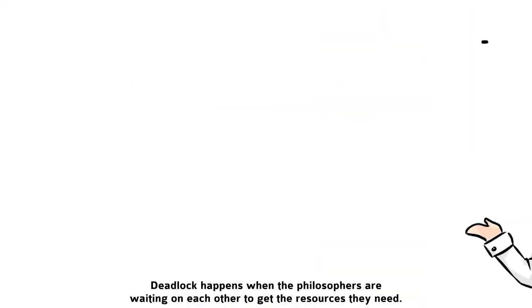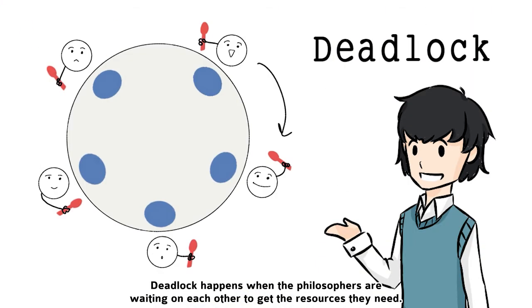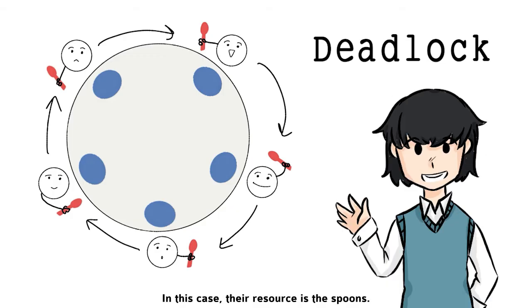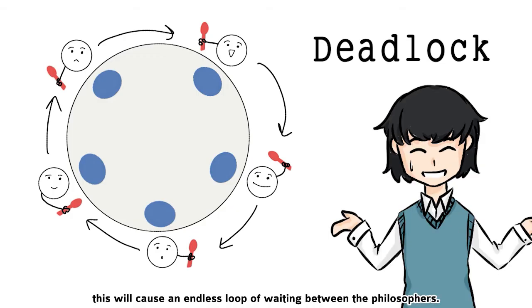But what is starvation and deadlock? Deadlock happens when the philosophers are waiting on each other to get the resources they need. In this case, their resource is the spoons. As you can see from the image, this will cause an endless loop of waiting between the philosophers.